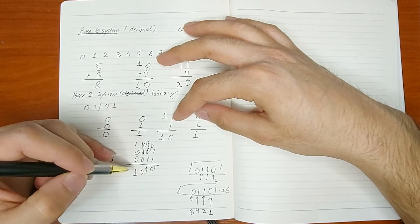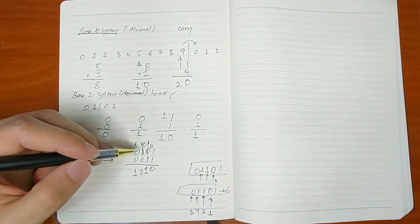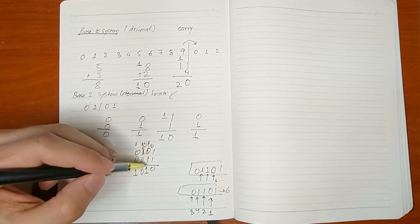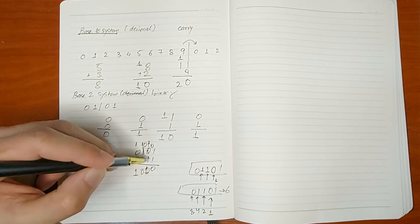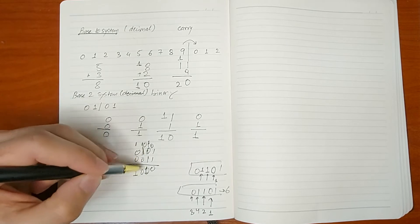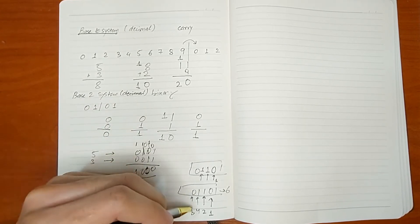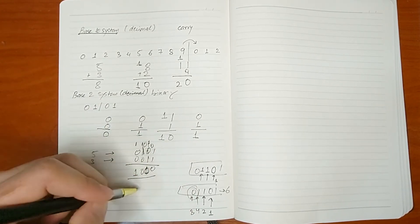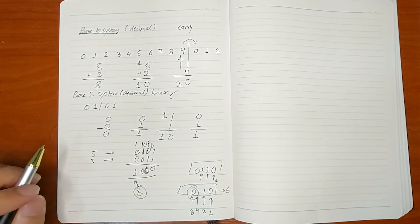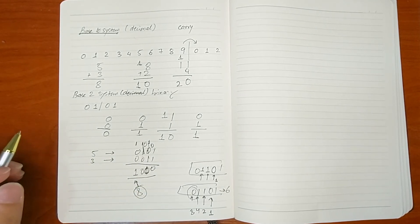After correcting a small mistake — 1 and 1 is 1, 0 — the final answer here is 8, as expected. So that's how you perform binary addition.